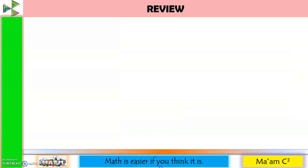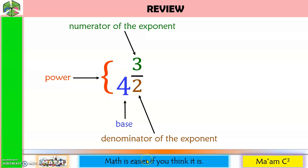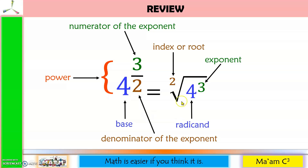Let's have a review first. The expression 4 raised to 3 over 2 is what we call the power. The power represents the base and the exponent. 4 is what we call the base. 3 is the numerator of the exponent, while 2 is the denominator of the exponent.